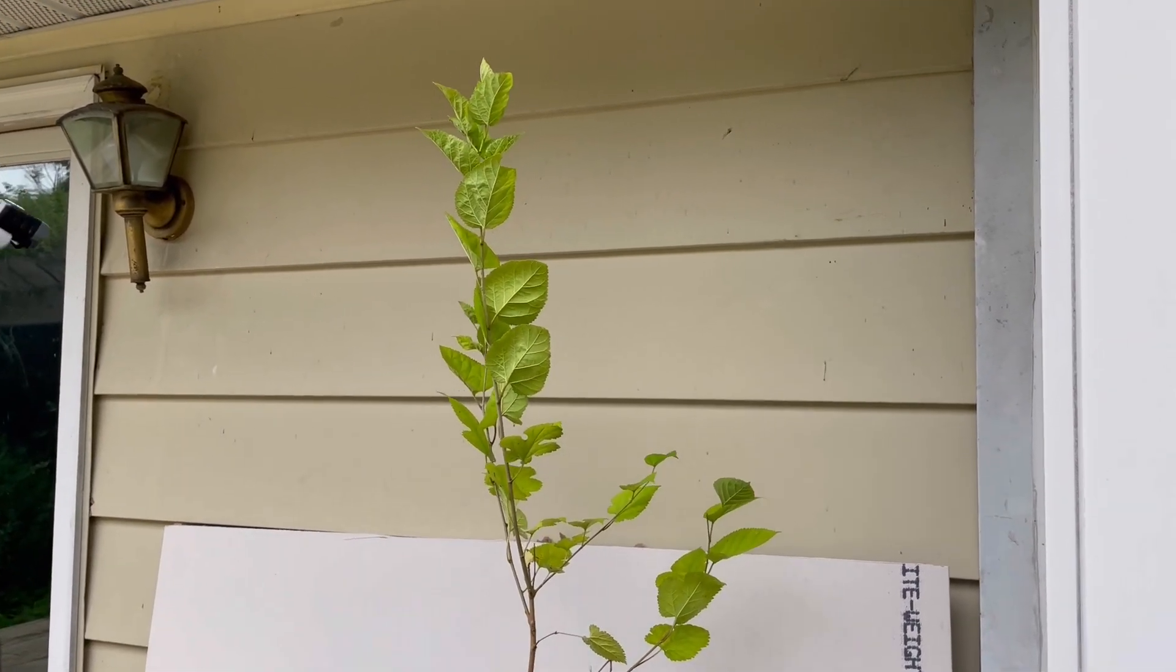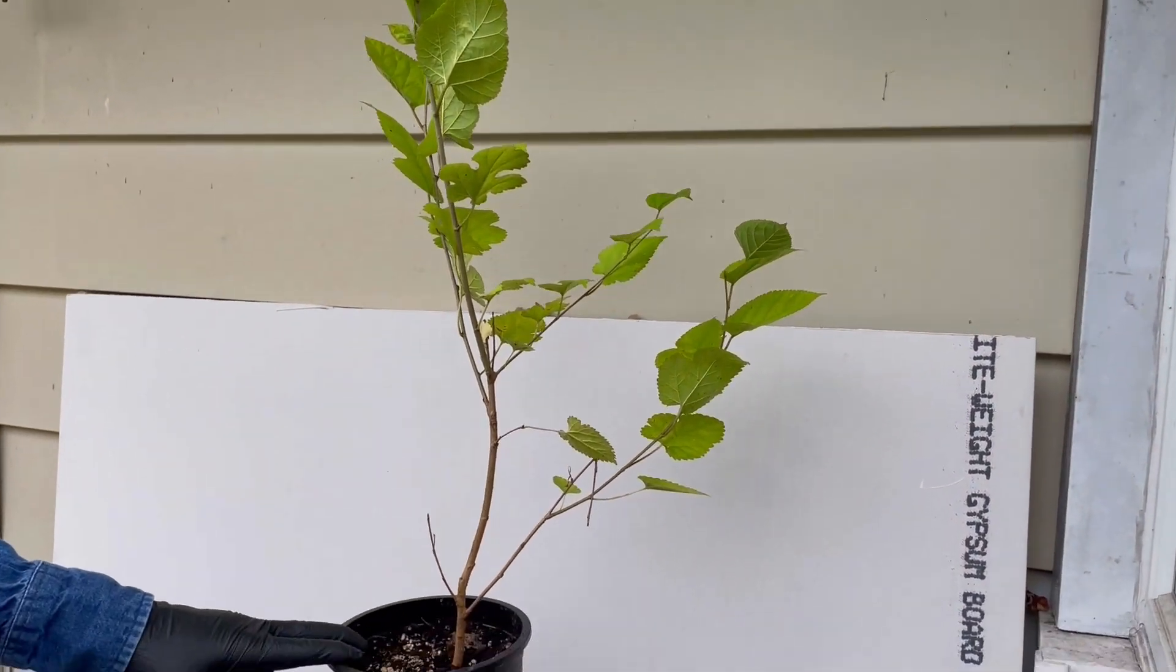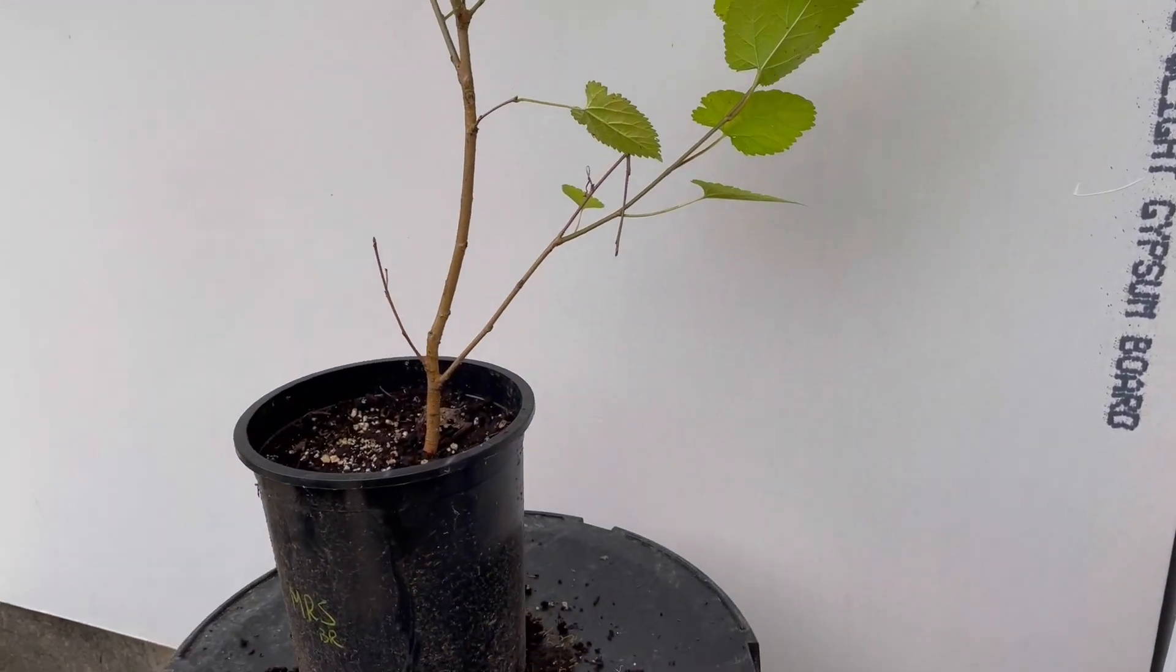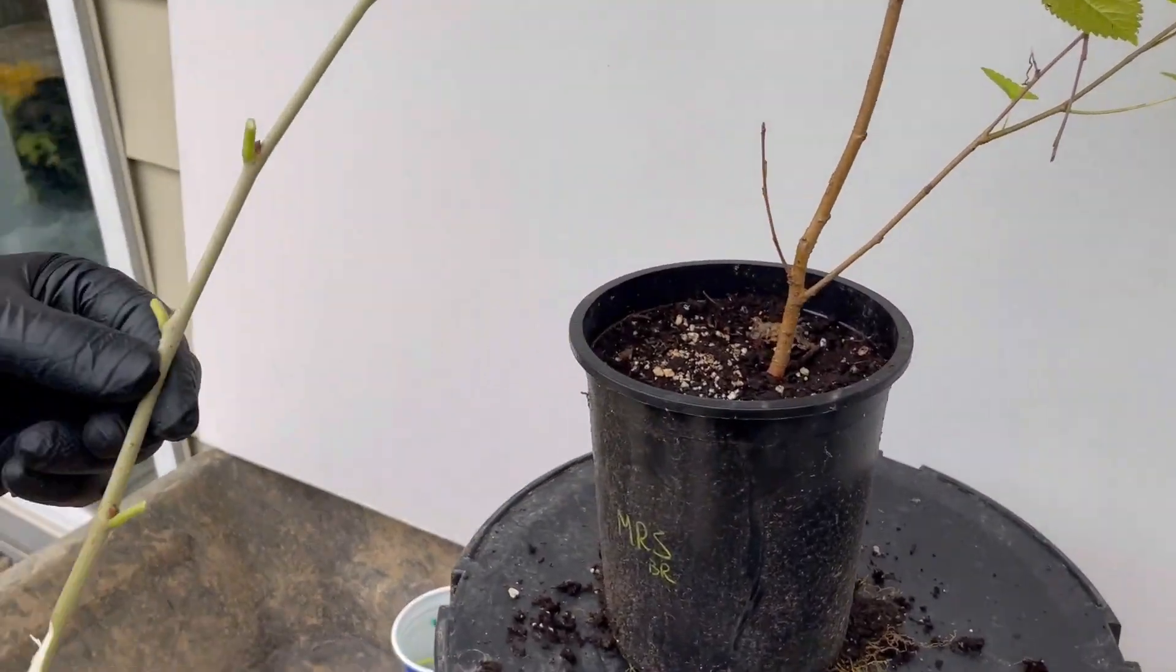I've got a Morris Rubra seedling. I'm going to attempt to do an inverted T bud graft of this Black Prince scion.